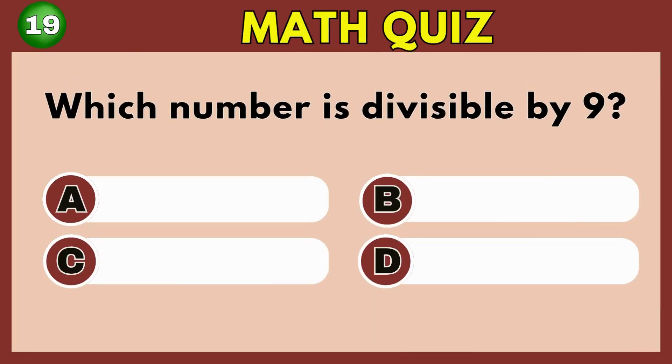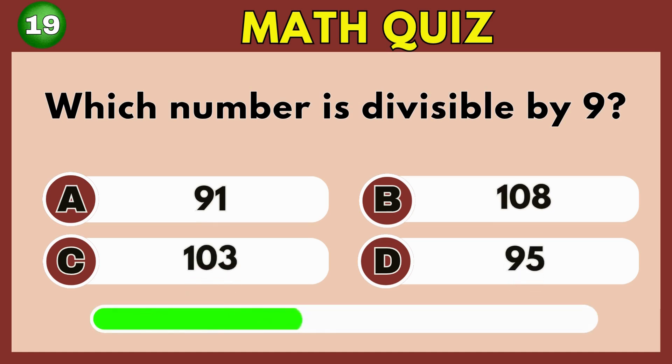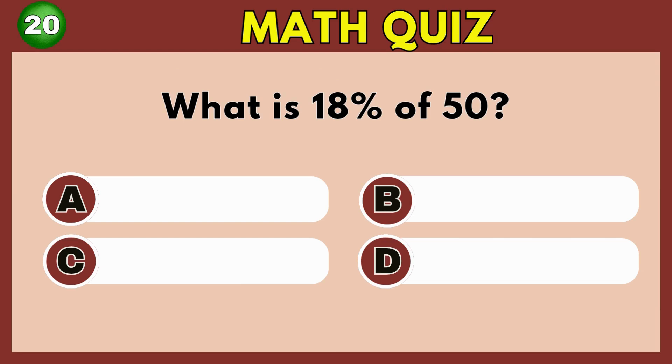Which number is divisible by 9? Option B. What is 18% of 50? Option B. 9.